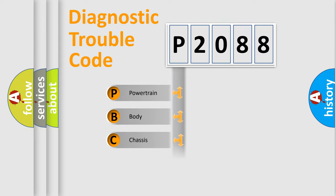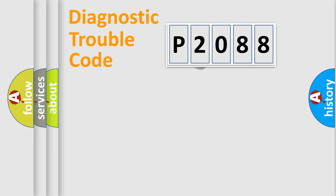We divide the electric system of automobile into four basic units: Powertrain, body, chassis, network. This distribution is defined in the first character code.